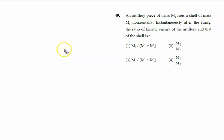An artillery piece of mass M1 fires a shell of mass M2. This is the artillery with mass M1, and this is the shell or bullet with mass M2. Instantaneously after the firing, we need to find the ratio of the kinetic energy of the artillery and that of the shell.